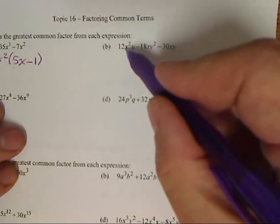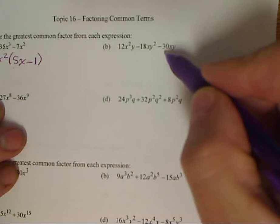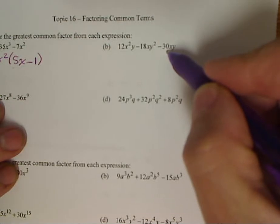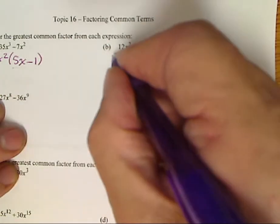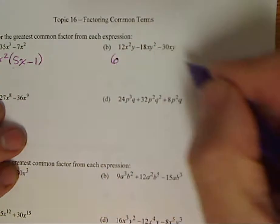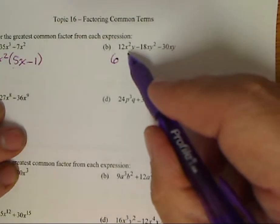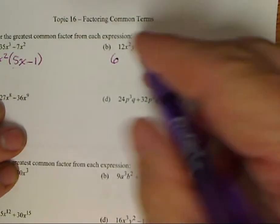Well, I look for a number that will go into 12, 18, and 30. Biggest number that will go into all those is 6. Then I go to my x's. I've got two x's. One x and one x. So I can take out an x.